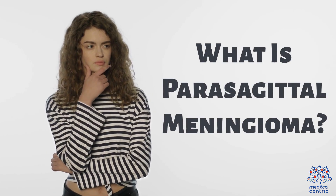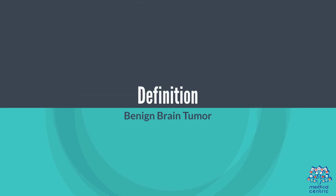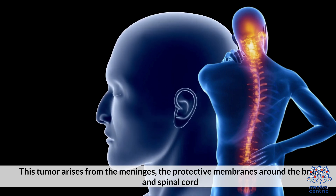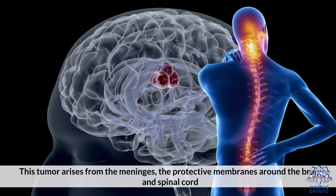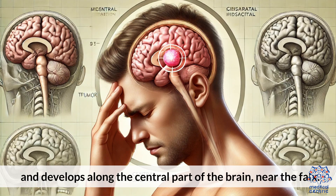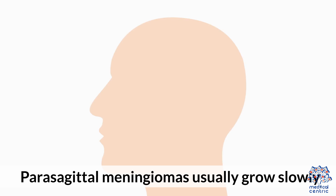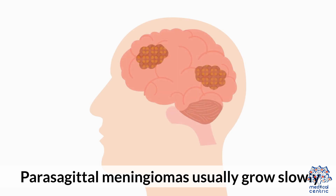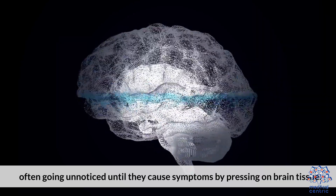What is Parasagittal Meningioma? This tumor arises from the meninges, the protective membranes around the brain and spinal cord, and develops along the central part of the brain near the falx. Parasagittal meningiomas usually grow slowly, often going unnoticed until they cause symptoms by pressing on brain tissue.